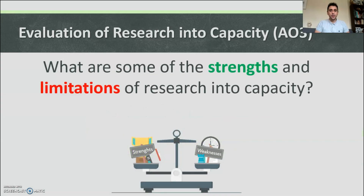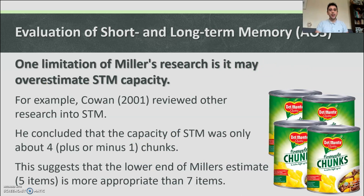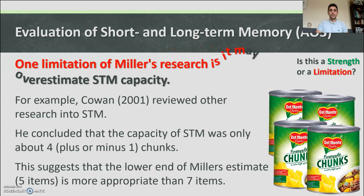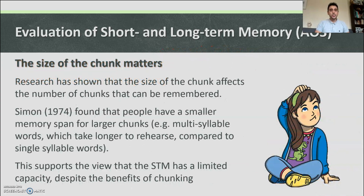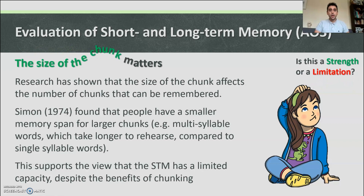Evaluation of capacity — strengths and limitations: One limitation of Miller's research is that it may overestimate short-term memory capacity. Cohen in 2001 reviewed other research and concluded the capacity of short-term memory was only about four plus or minus one chunk, not the seven plus or minus two Miller suggested. Additionally, Simon found that people have a smaller memory span for larger chunks — for example, multi-syllable words compared to single syllable words — supporting the view that short-term memory has a limited capacity despite the benefits of chunking.